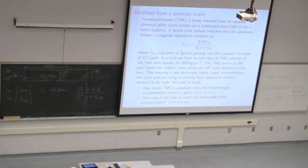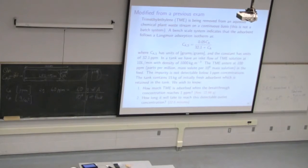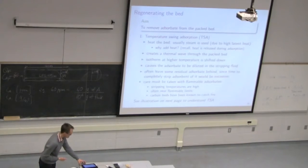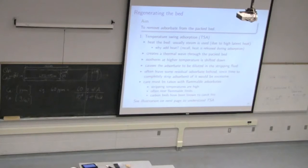If you want to optimize the situation — find a flow rate that gives good throughput and also a steep curve — coming back to bed design, there are several parameters available to the engineer designing a new bed. But most often we come to the case of an existing bed, and the breakthrough profile is a strong function of flow rate Q. If you slow Q down, you get a very different wavefront shape than if it's really fast. A lot of experimentation is required. Once the bed is loaded up, we need to regenerate it. There are two ways: temperature swing and pressure swing.